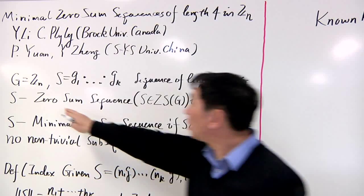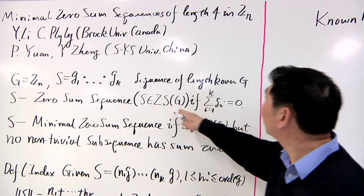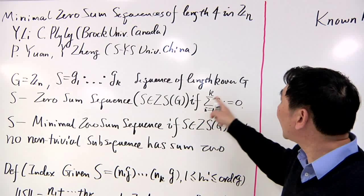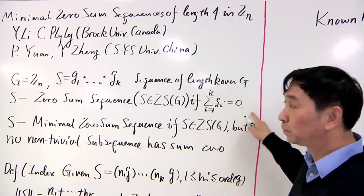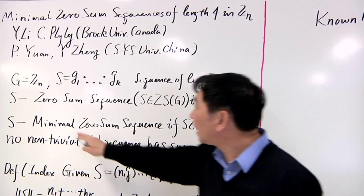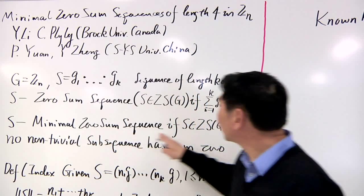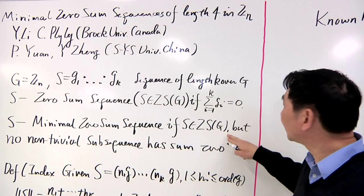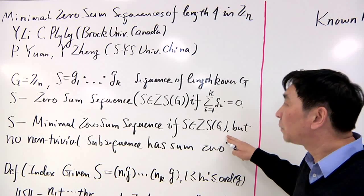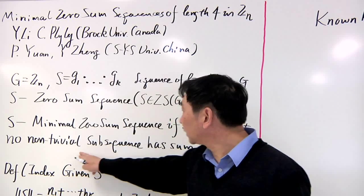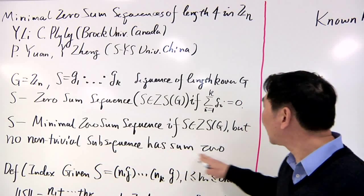s is called a zero-sum sequence if the sum of all elements in s is zero. s is called a minimal zero-sum sequence if s is a zero-sum sequence, but no non-trivial sub-sequence has sum zero.